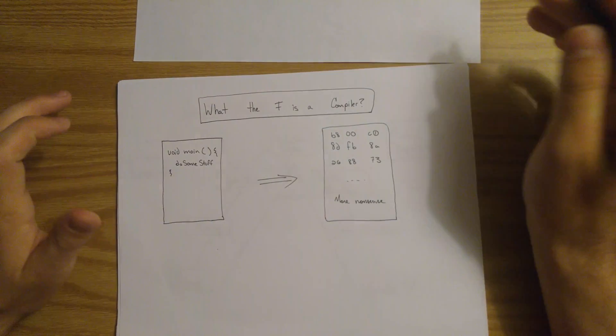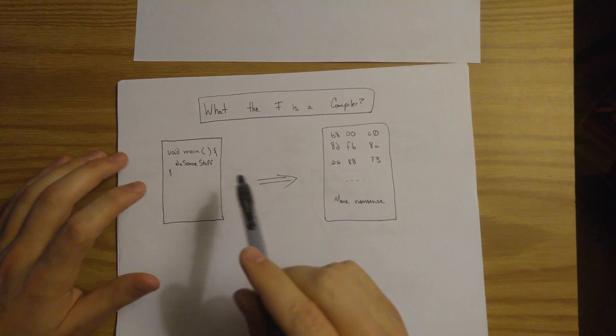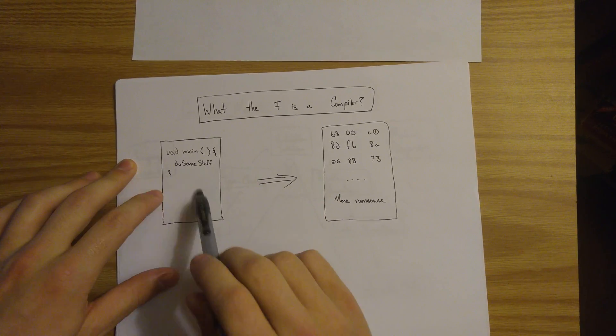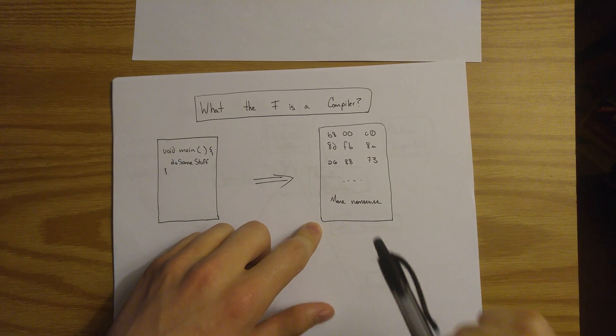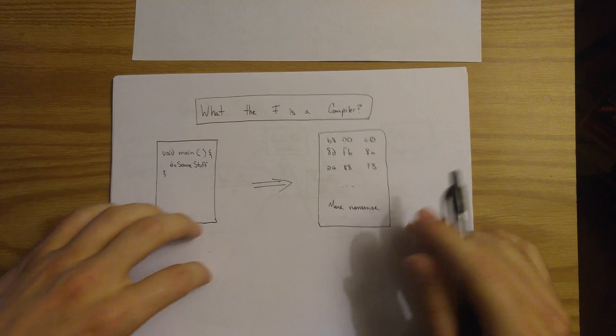So what is a compiler? A compiler is a program that takes programs written in a high level language and transforms them into programs that a computer can understand and compute directly.